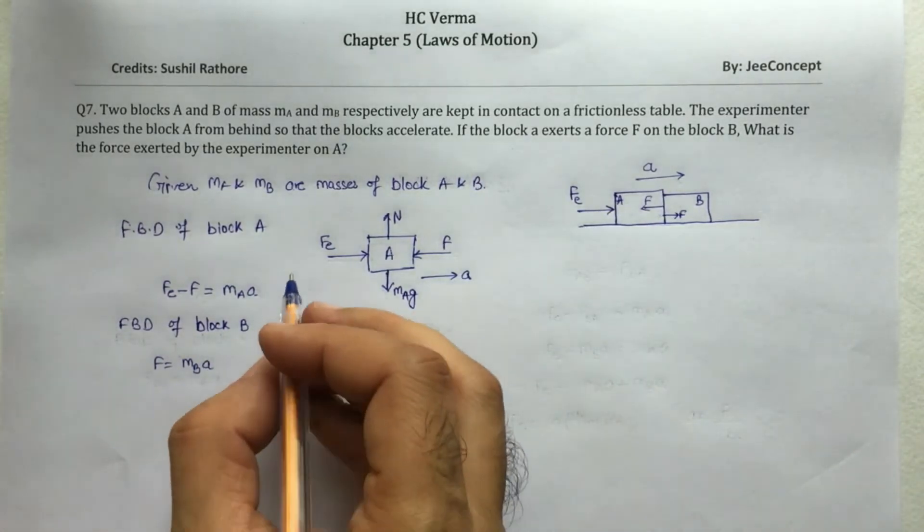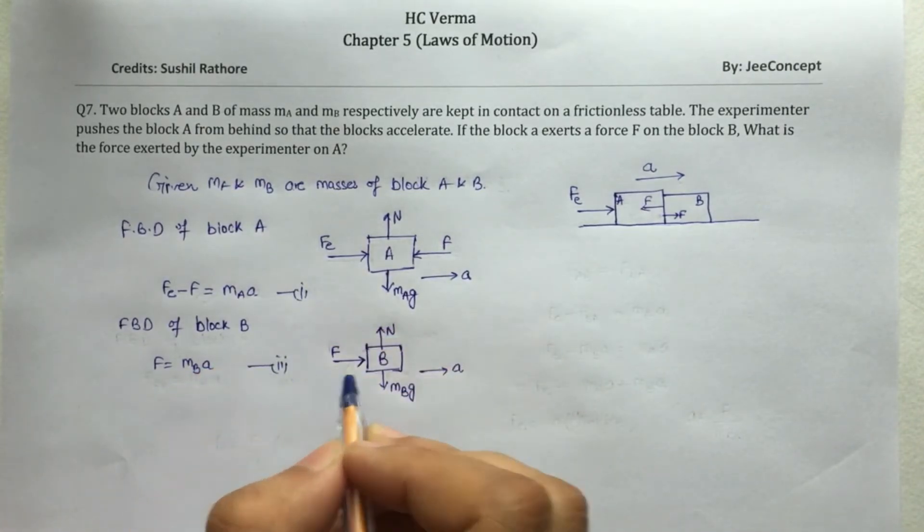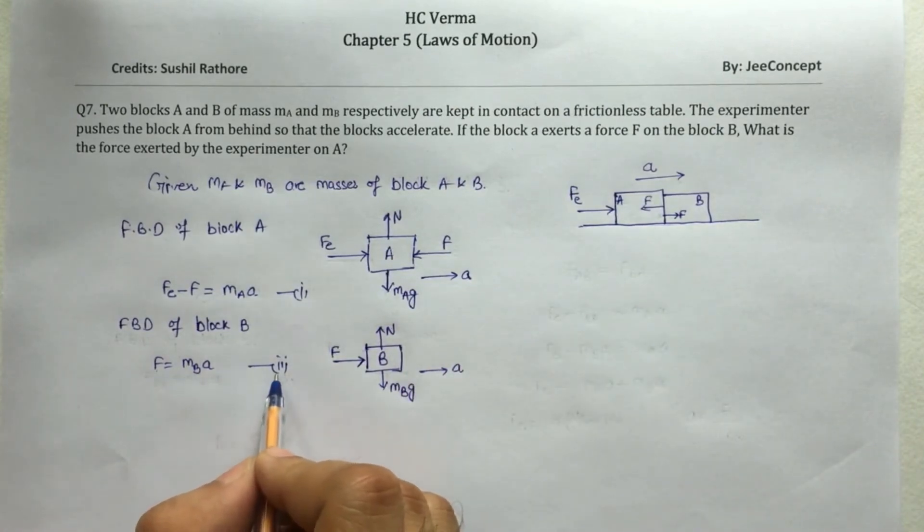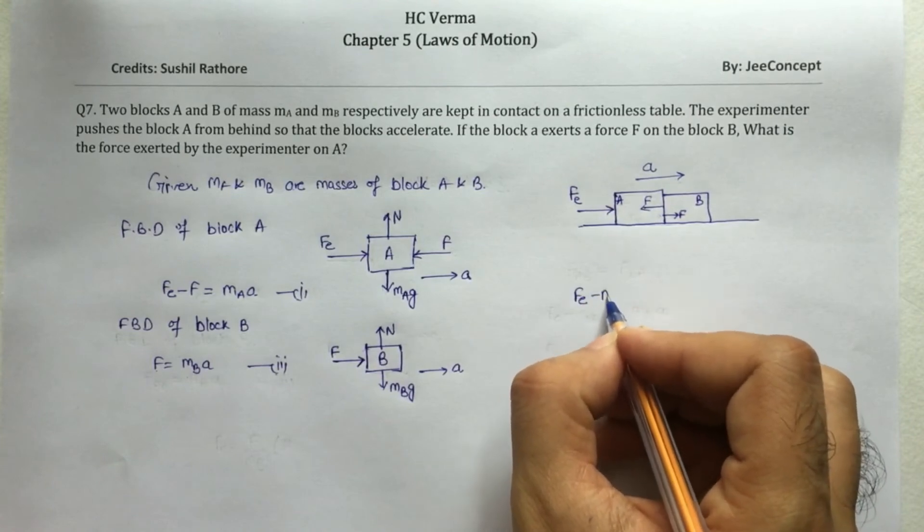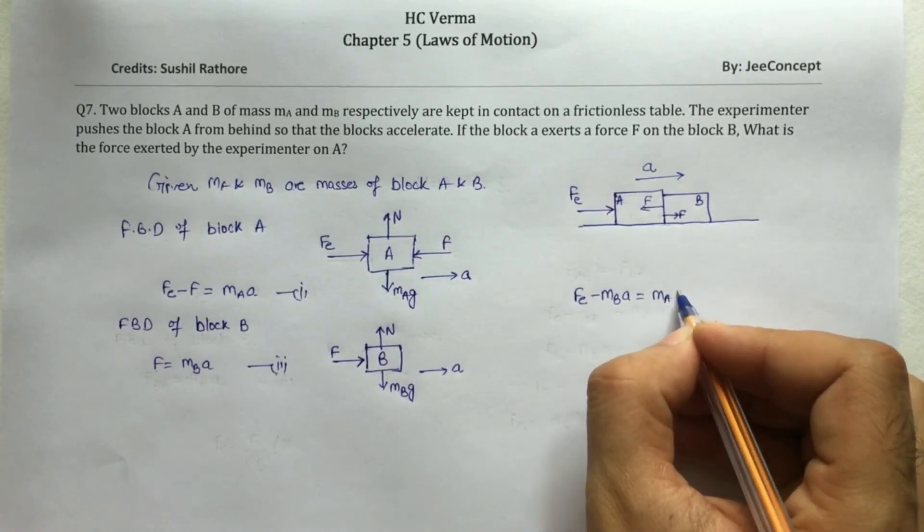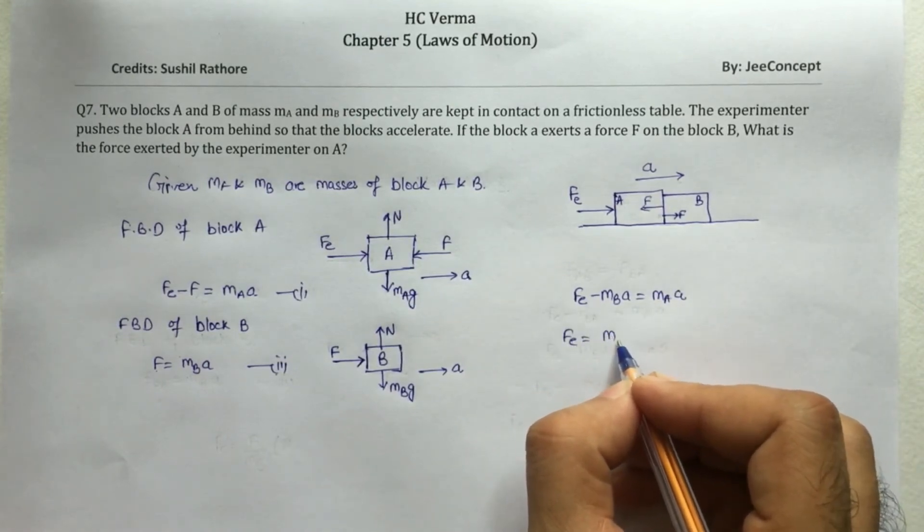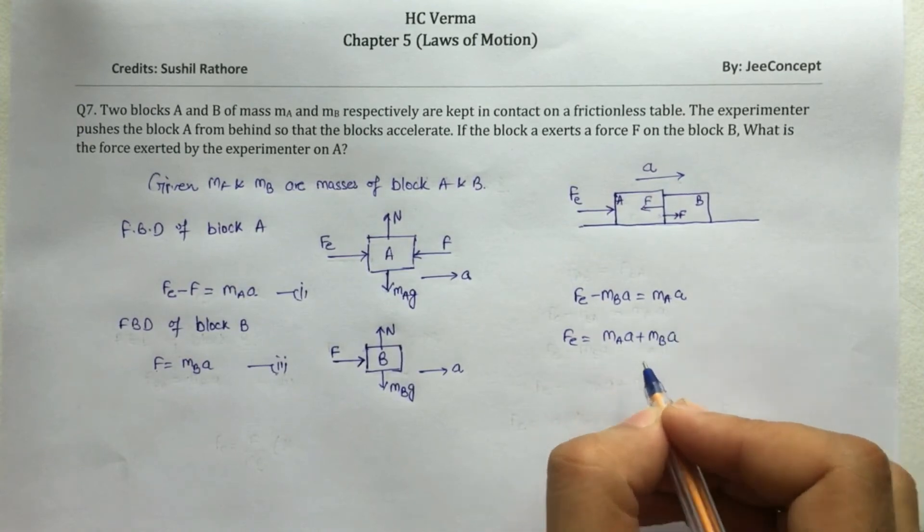Now I will say this is equation 1 and this is equation 2. So I am putting the value of F from equation 2 in equation 1. So that is going to be Fe minus MB A is equal to MA times A. So that means Fe is equal to MA plus MB times A.